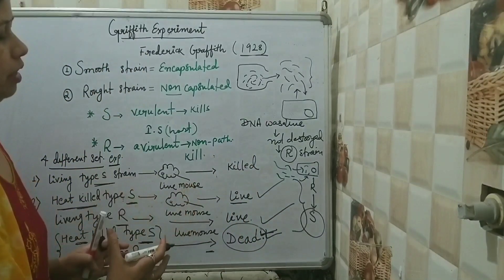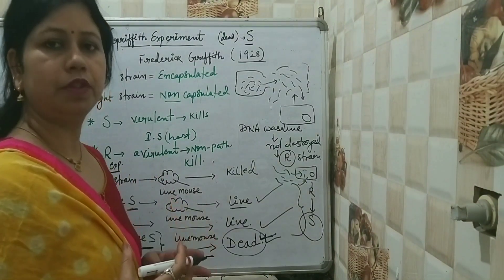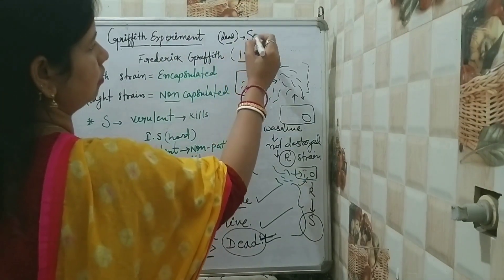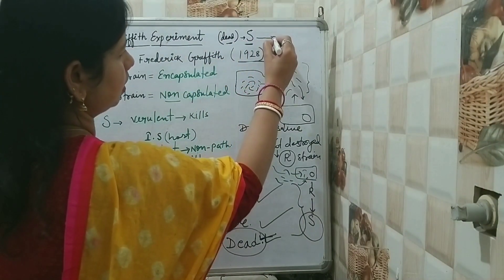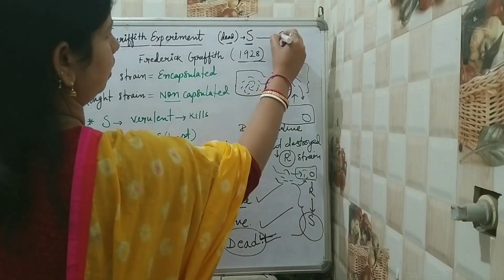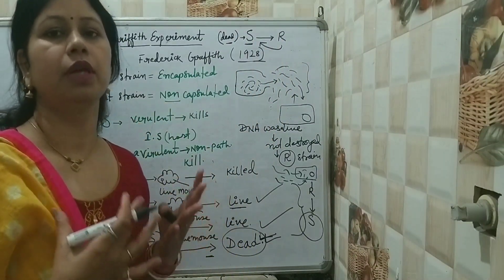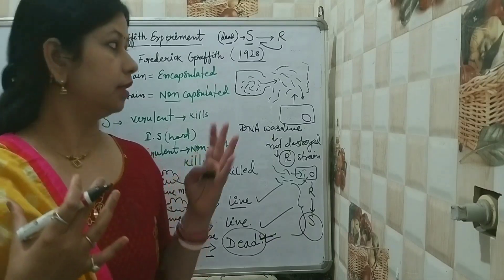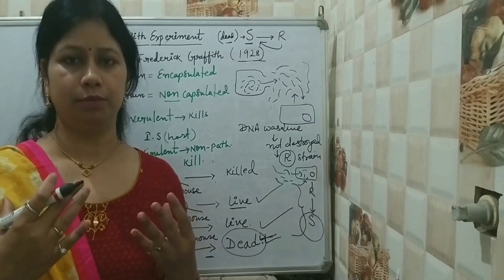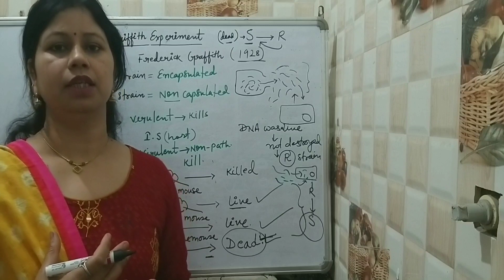By this experiment, Frederick Griffith proved that some component of the heat-killed or dead type S strain must have converted the living type R strain into smooth strain. That is the transforming principle. If you like my video, please press the like button, share it with your friends, and please subscribe to my channel. Thank you.